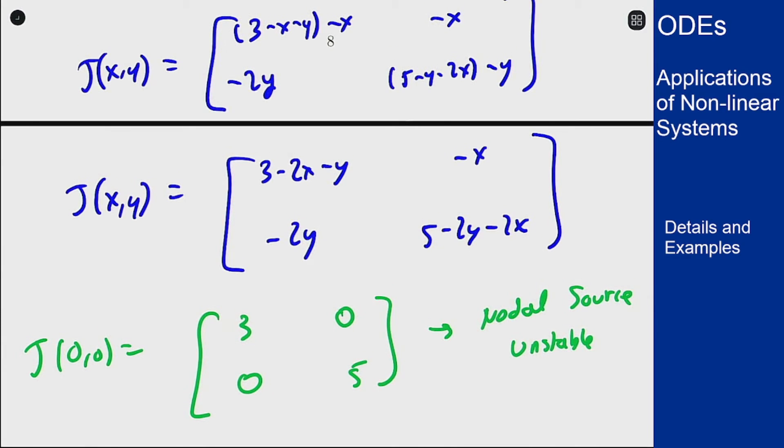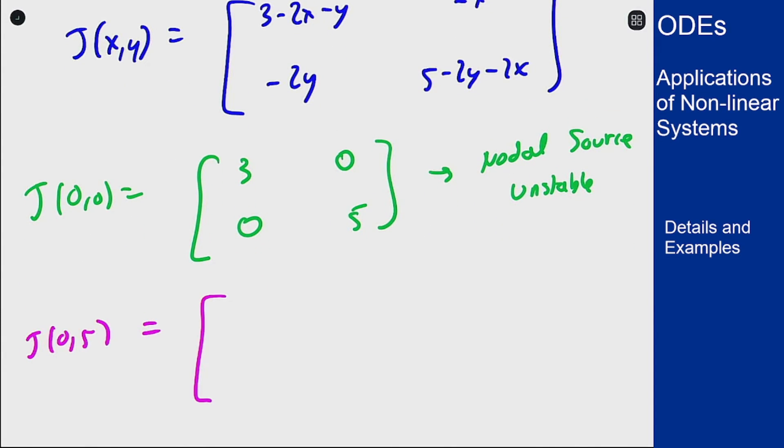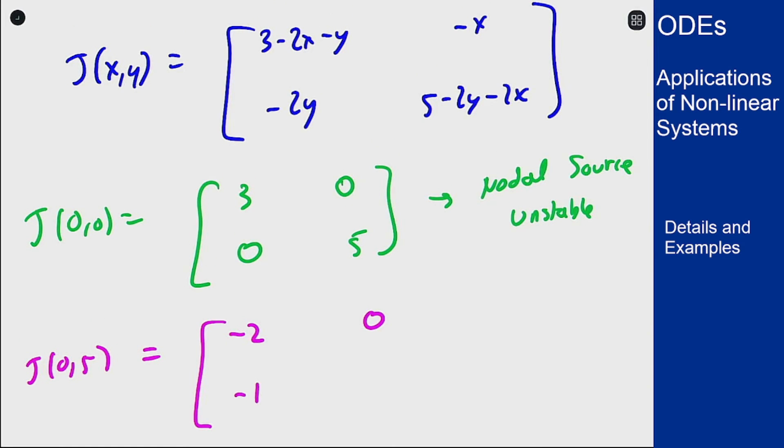We then have 0 and 5. x is 0, y is 5 will be negative 2, 0, negative 10, negative 10. This is triangular so the eigenvalues are going to be minus 2 and negative 10. This will be a nodal sink and so asymptotically stable.